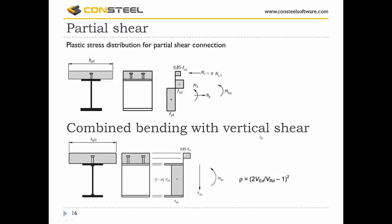Next is the check for combined bending with vertical shear. When the vertical shear force is greater than half the vertical shear resistance, an allowance for its effect on the bending resistance moment is required. For class 1 and class 2 cross-sections, the influence of vertical shear on bending resistance is accounted for by a reduced steel design strength for the shear area, which is the web section.